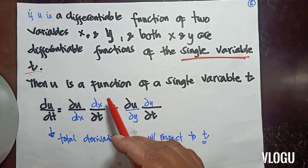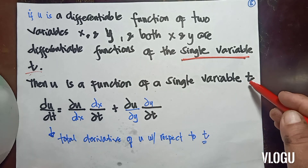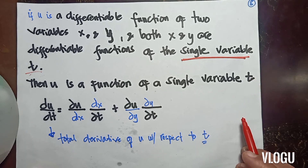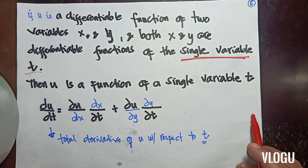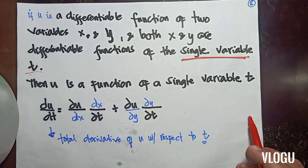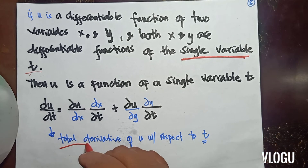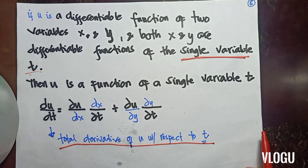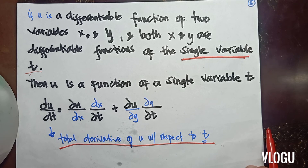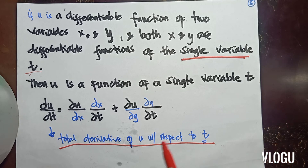So then, u is a function of the single variable t — it is differentiable with respect to the single variable t. Our answer for that is called the total derivative of u with respect to t. That is not a partial derivative, because for x and y you have a single variable.